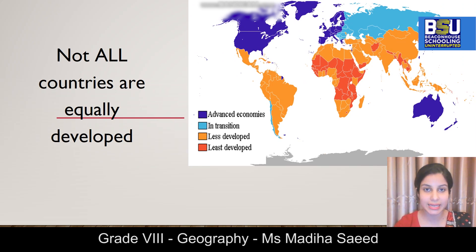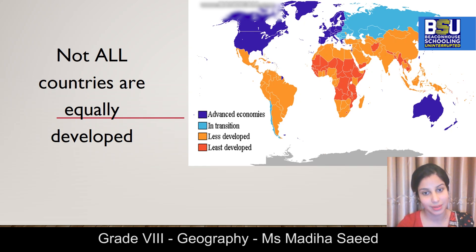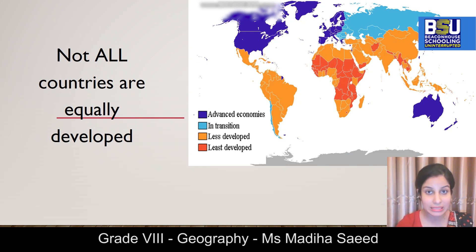Are there any categories in which countries are divided depending upon their developmental situation? If you look at the world map in front of you, you can see economies known as advanced economies shown in purple. Then economies in transition are shown in cyan. Less developed or developing countries are shown in orange, and least developed or underdeveloped economies are shown in red. Depending upon the developmental index, countries are divided into four categories.